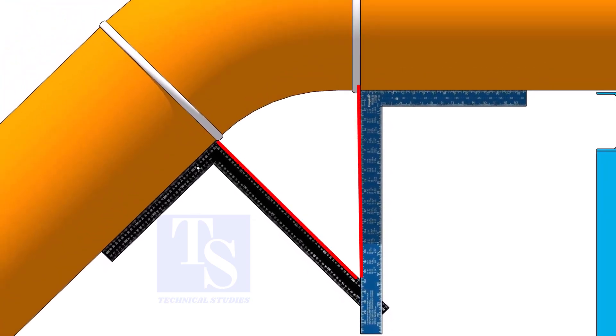Measure the distance from the pipe to the point where the right angles bisect each other. Measuring only one side is enough. Now, carefully measure the distance between the corners of the right angles.